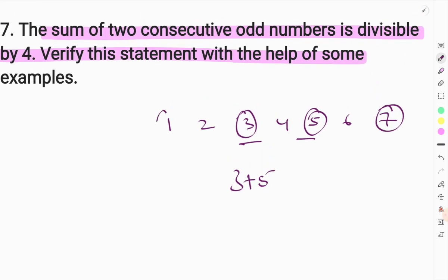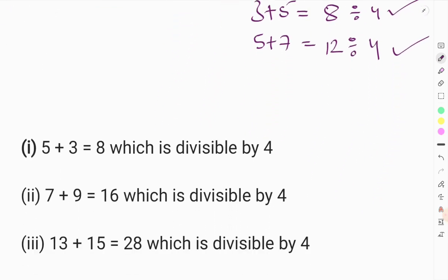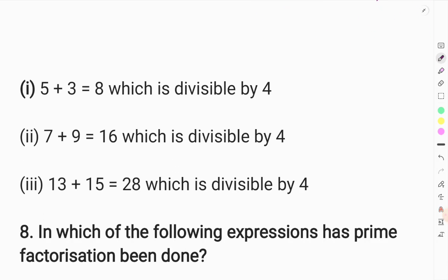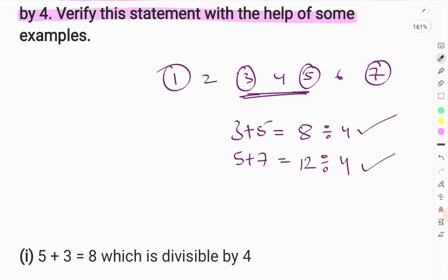Verify this statement with the help of some examples. If we do 3 and 5, what will happen? We check divisibility. If we do 7, then 12 will divide by 12. So this is correct. We will give you 2 consecutive numbers to verify.